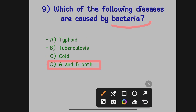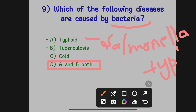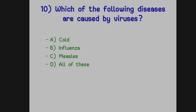Typhoid is caused by Salmonella typhi, and tuberculosis is caused by Mycobacterium tuberculosis. These are the two bacteria which cause typhoid and tuberculosis.